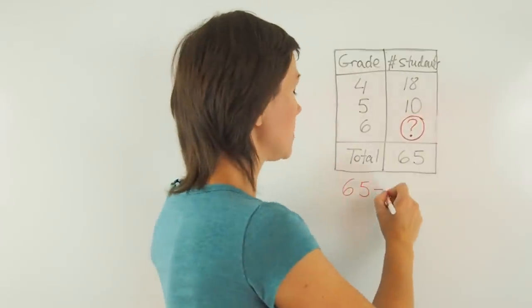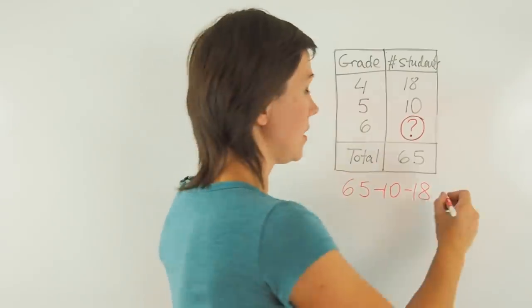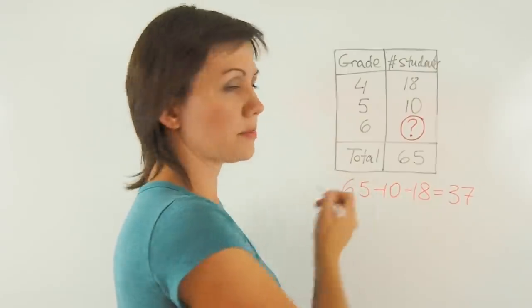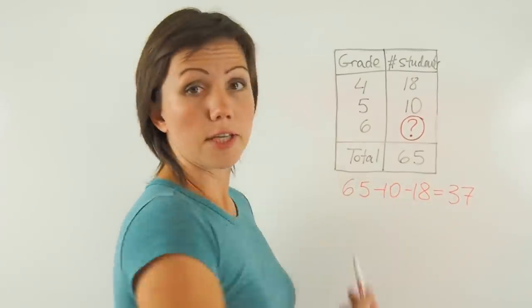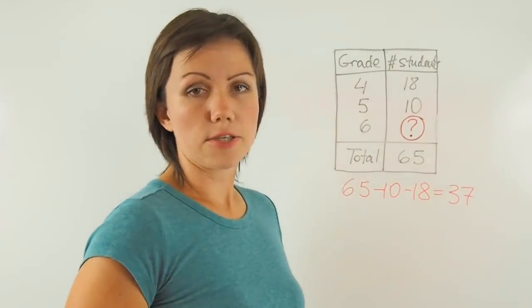65 subtract 10 subtract 18, and that gives me 37. 65 subtract 10 is 55, subtract another 10 is 45, subtract 8 is 37.